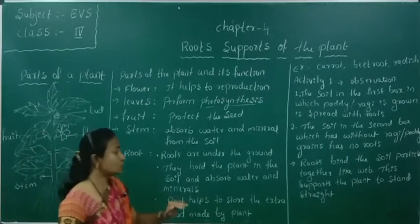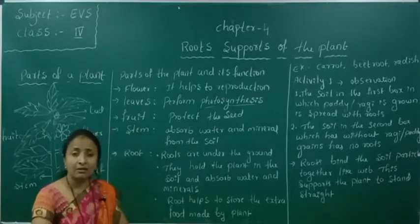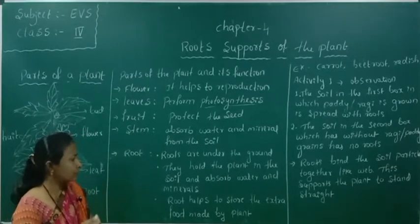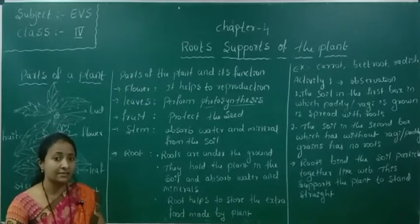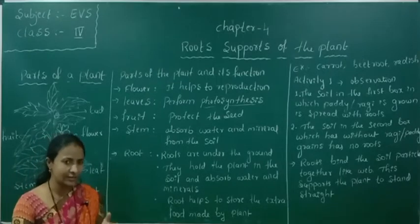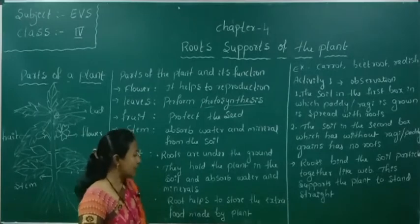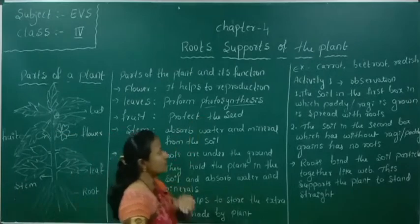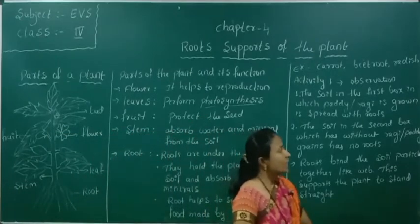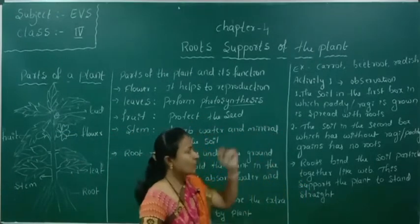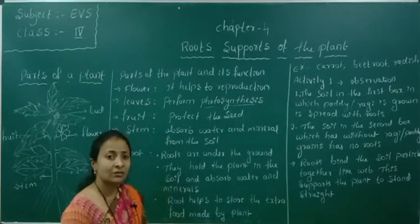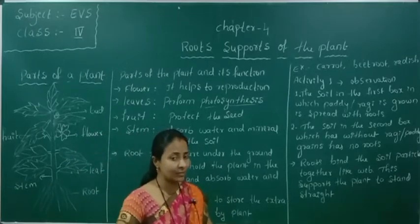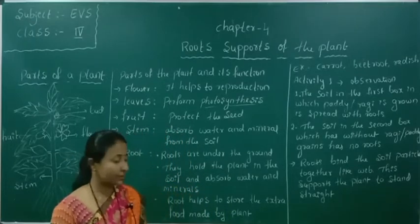Roots also help to store extra food materials made by the plant. Which plants do we eat? That food material is called the edible part. Some examples are carrot, beetroot, radish, sweet potato, etc. These are all roots of plants that we eat — they are edible.